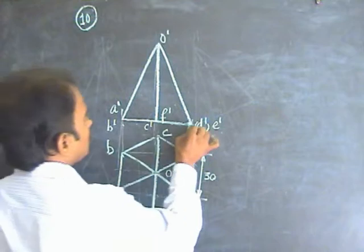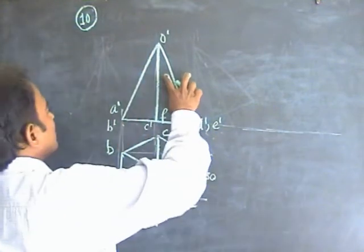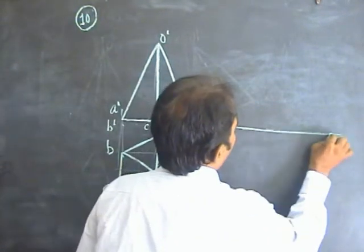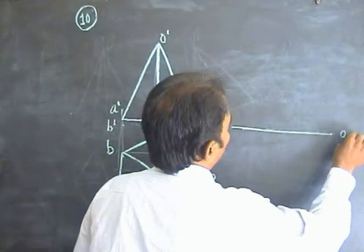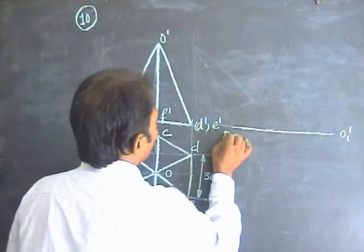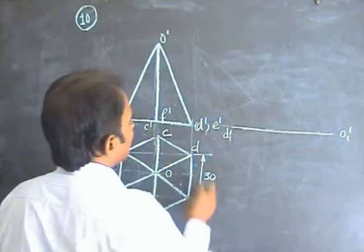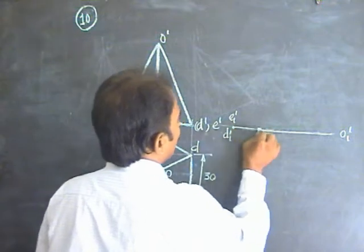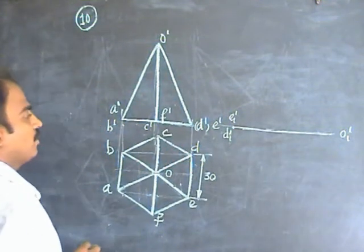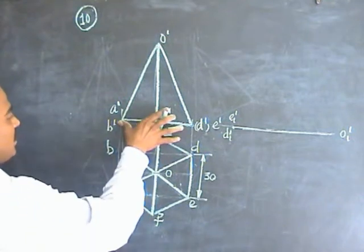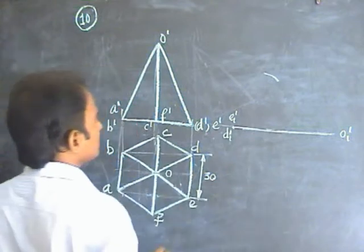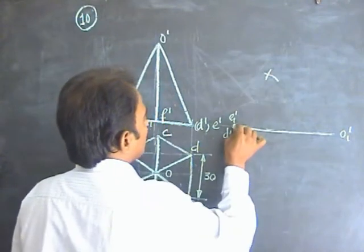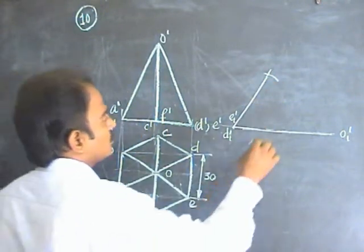Now take this line — D dash is visible, E dash is visible. One of the triangular faces is on HP, so the frontier of that triangular face is on the XY line. Take this distance and make an arc from here. Similarly, take the slant height distance and from here make another arc. So now that position is obtained.